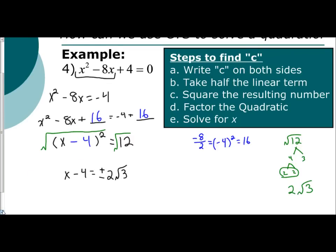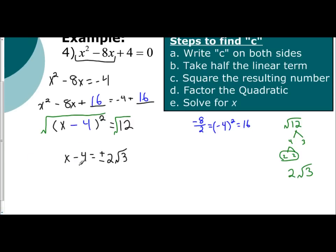To finish solving for x, you need to get it by itself. So you have a minus 4 on that side. So you're going to cancel that out by adding 4, which means it's going to be positive on the other side. So I'll put that in front of the plus or minus. So you have 4 plus or minus 2 square root of 3. And that is your answer.